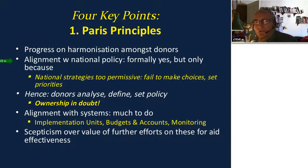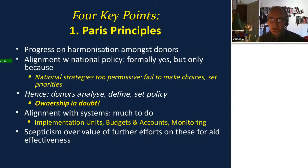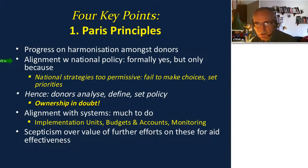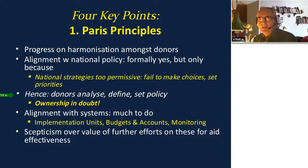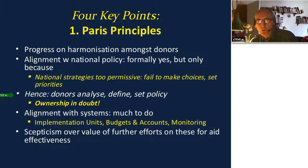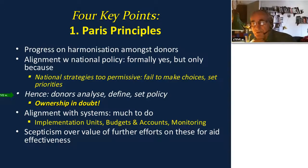National strategies didn't make many hard choices, didn't set priorities, and therefore almost anything sensible that had been funded and carried out with donor support was going to be aligned with some part of the overly flexible national policy framework. The consequence was that donors were doing additional analyses, and within agricultural and rural development you'd have a dozen external development partners each running their own diagnosis of the sector, often coming to slightly different conclusions about priorities — effectively doing much of the job of defining and setting policy inside these permissive national frameworks.